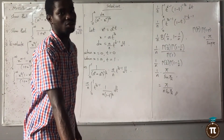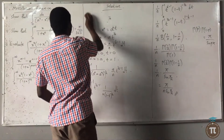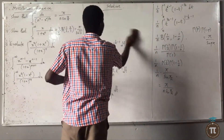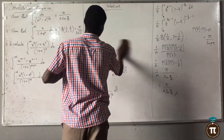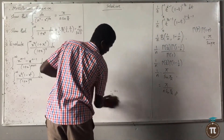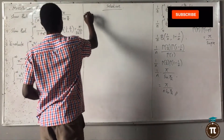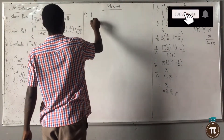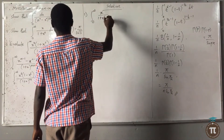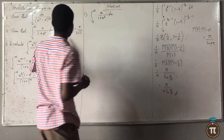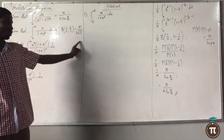Now for question 2. We have shown that the integral from 0 to infinity of x over (1 plus x)^6 dx equals 1/6 · Beta(1/3, 2/3), which equals a specific value.